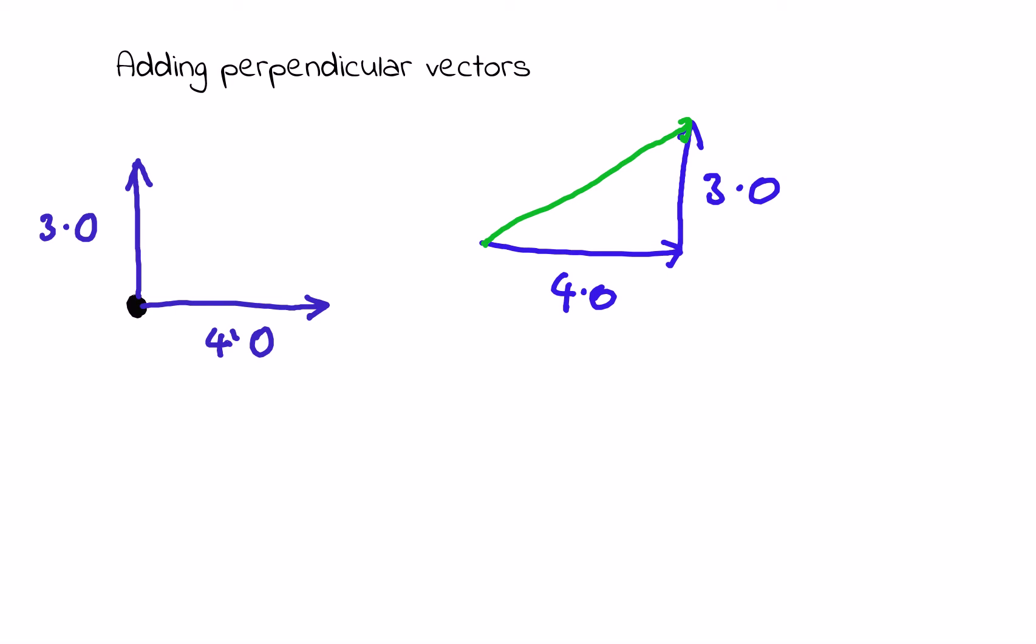Because this is a right angle triangle, in order to calculate the magnitude of my resultant vector, I would use Pythagorean theorem. Pythagorean theorem tells me that x squared plus y squared is equal to z squared, or more informally, the square of the hypotenuse is equal to the sum of the squares.